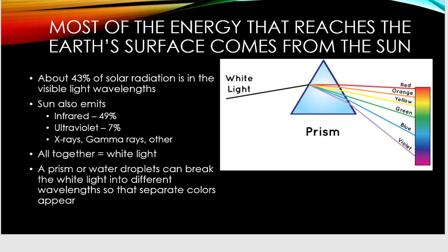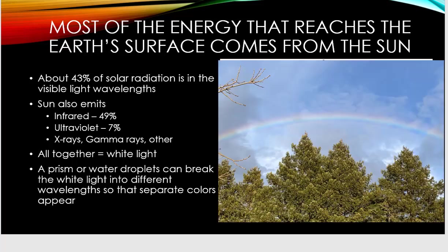Most of the energy that reaches Earth's surface comes from the Sun. About 43% of that radiation is in the visible light spectrum, but we also see some infrared, ultraviolet, x-rays, and gamma rays — really short wavelengths altogether, which we call white light. If you put white light through a prism, you can see it separated into different colors. The shorter wavelengths are refracted or bent more than the longer wavelengths. Even longer than red would be infrared; shorter than violet would be UV or ultraviolet.